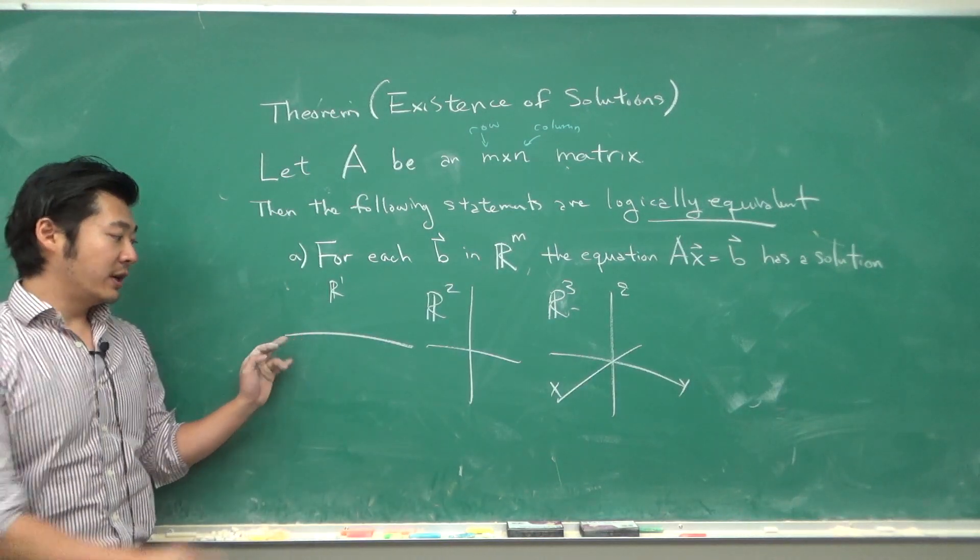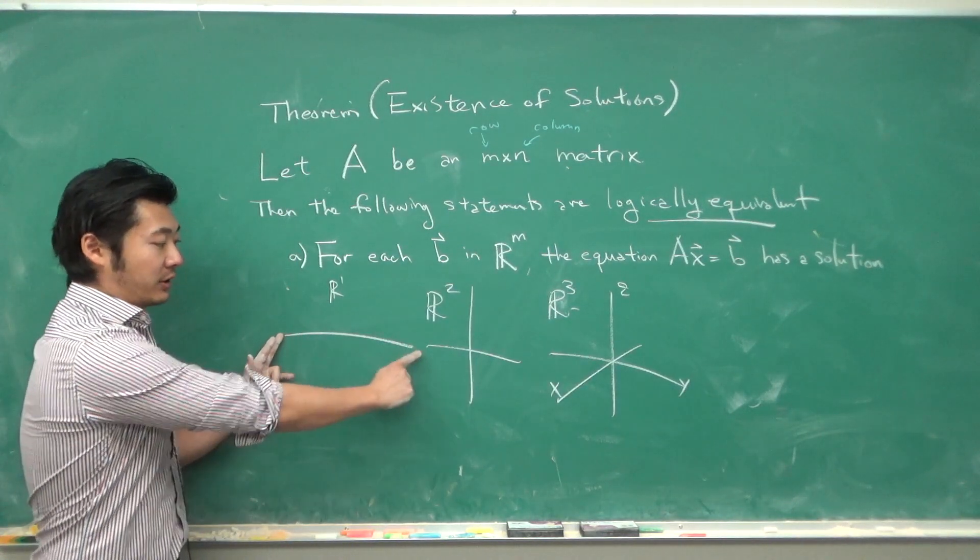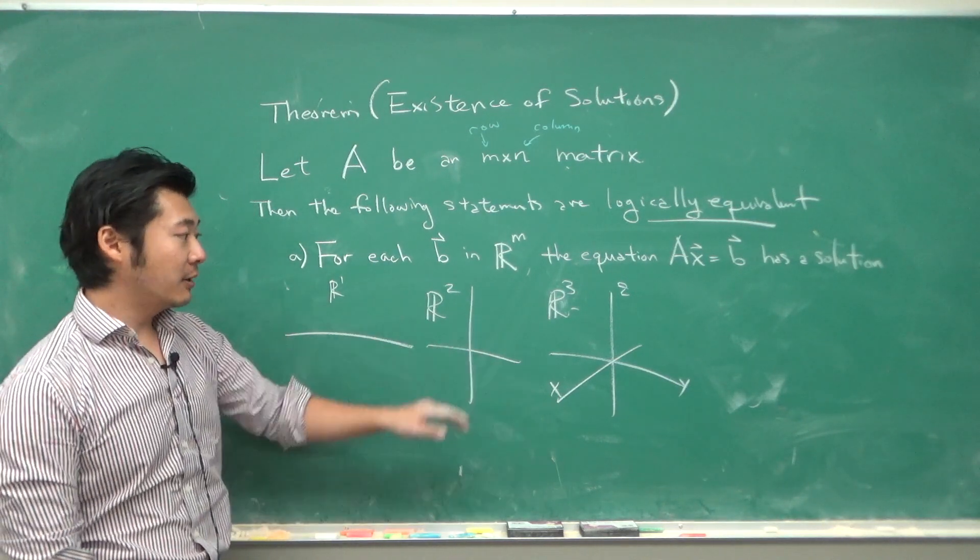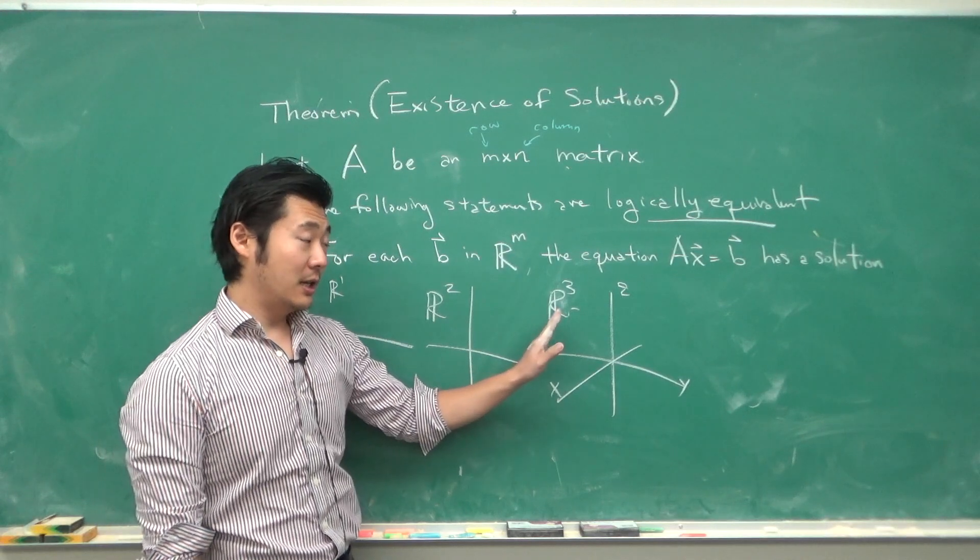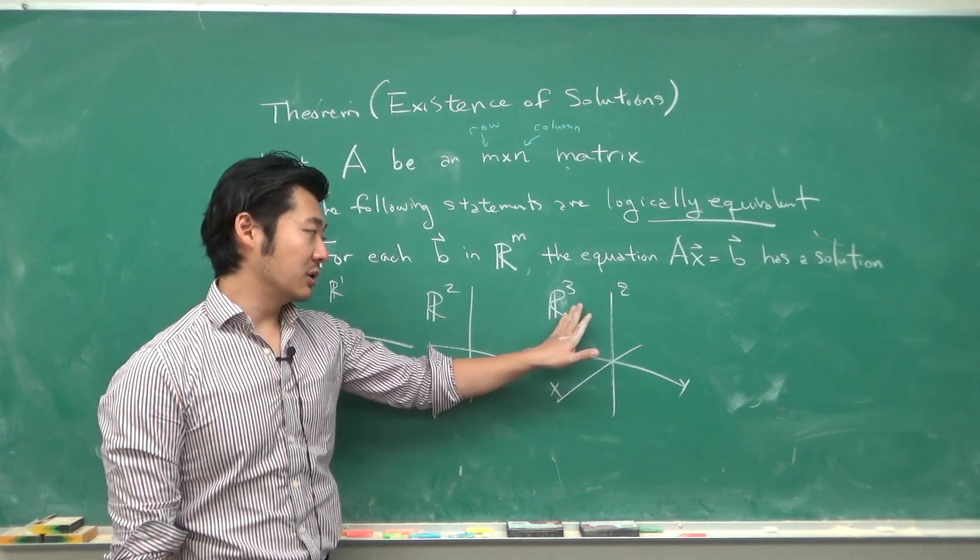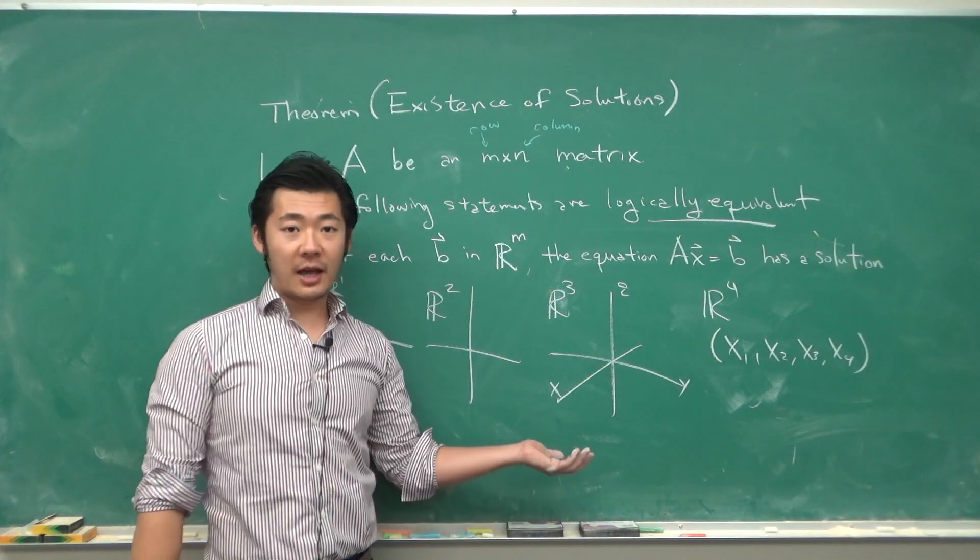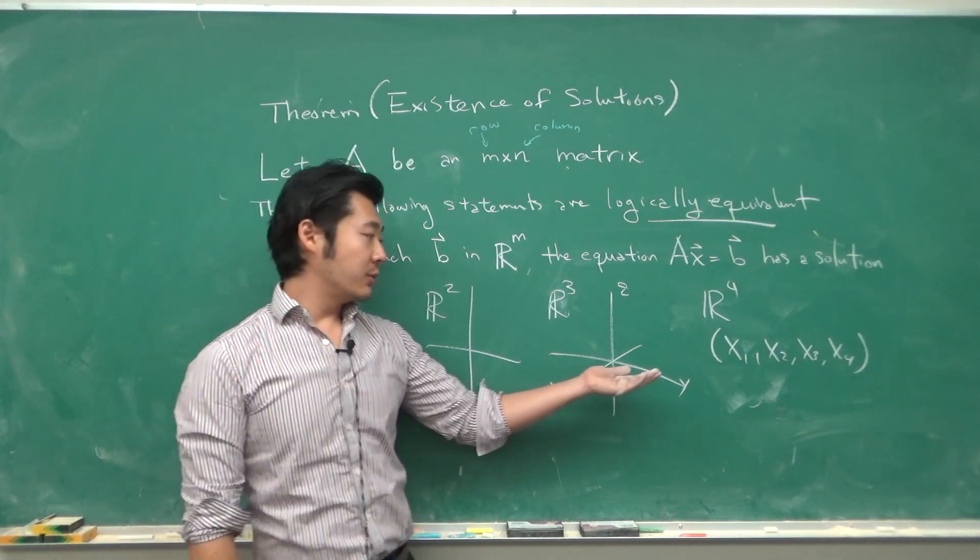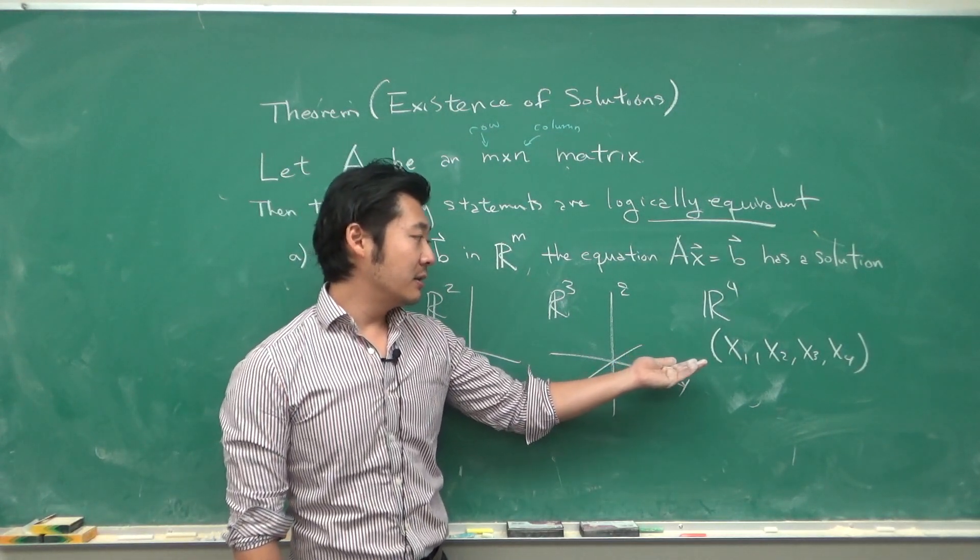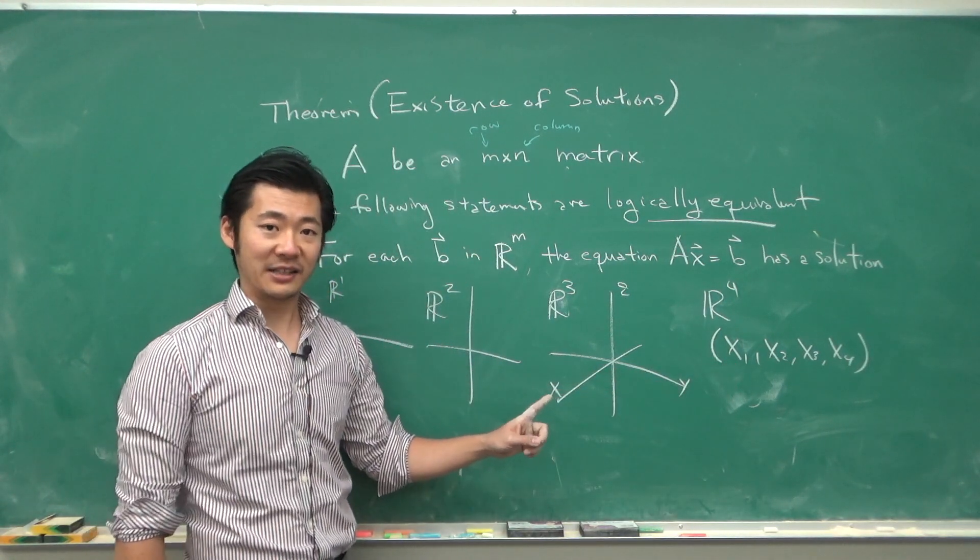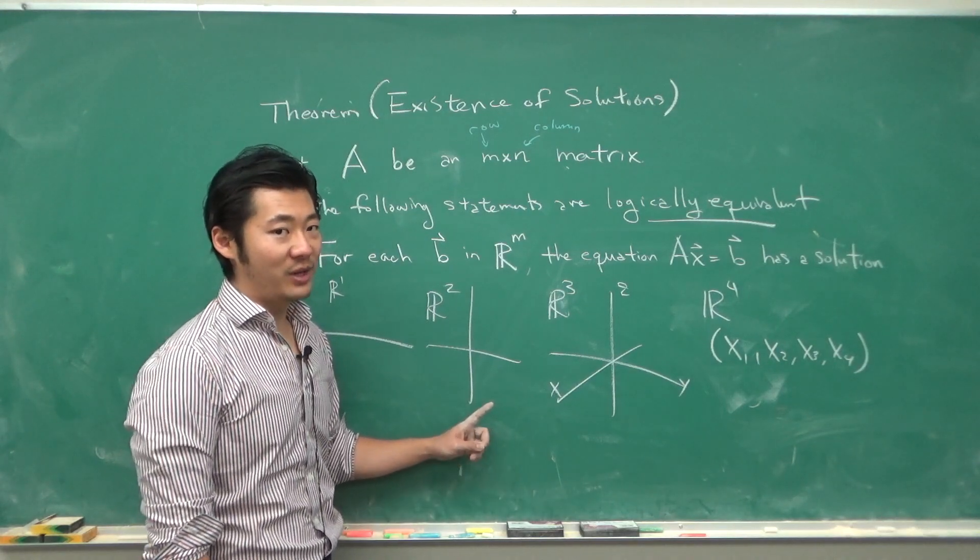So R^1 would be just the real number line. R^2 would be the two-dimensional plane. R^3 is the three-dimensional space that could go in X, Y, or Z. Now you can have R^4 which would just be represented by four real numbers. It's a little bit hard to visualize what R^4 would be.